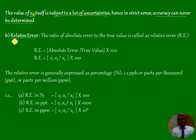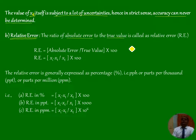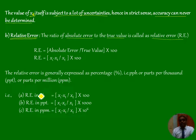Relative error is another term used for the expression of accuracy. It is the ratio of absolute error to the true value. The ratio of absolute error to the true value is called relative error. So: Relative error = Absolute error / True value × 100.